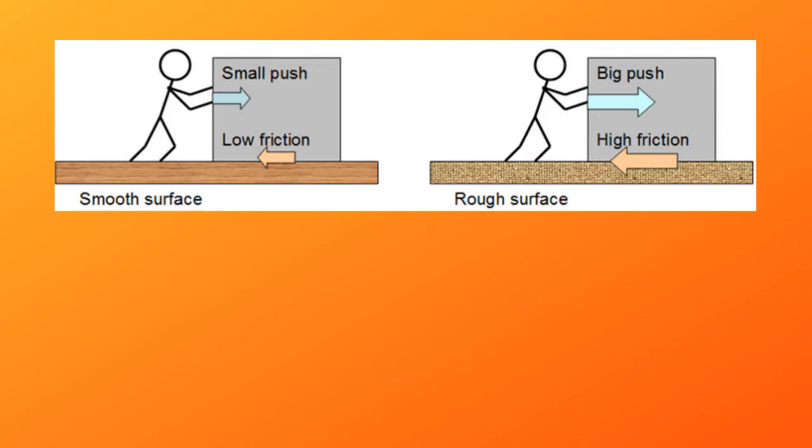In rough surfaces, the pits and heights will be more, which leads to slowing down of the body which moves over the other. Now you understand why it is difficult to ride the bicycle through rough surfaces. As roughness increases, friction increases, and so we have to apply more force for the movement of the body.